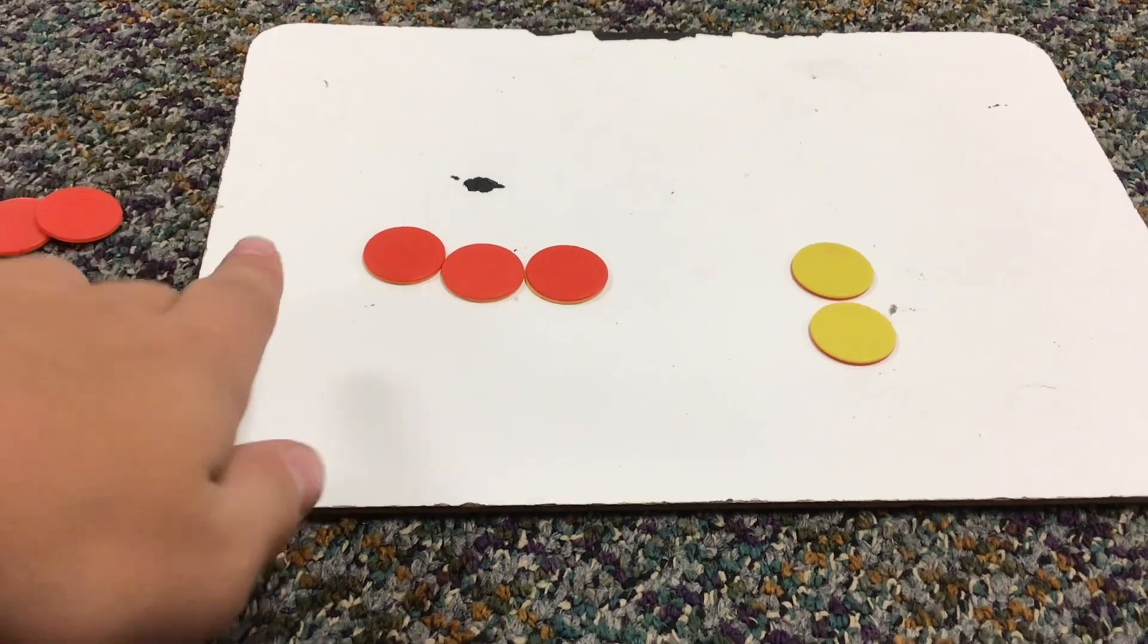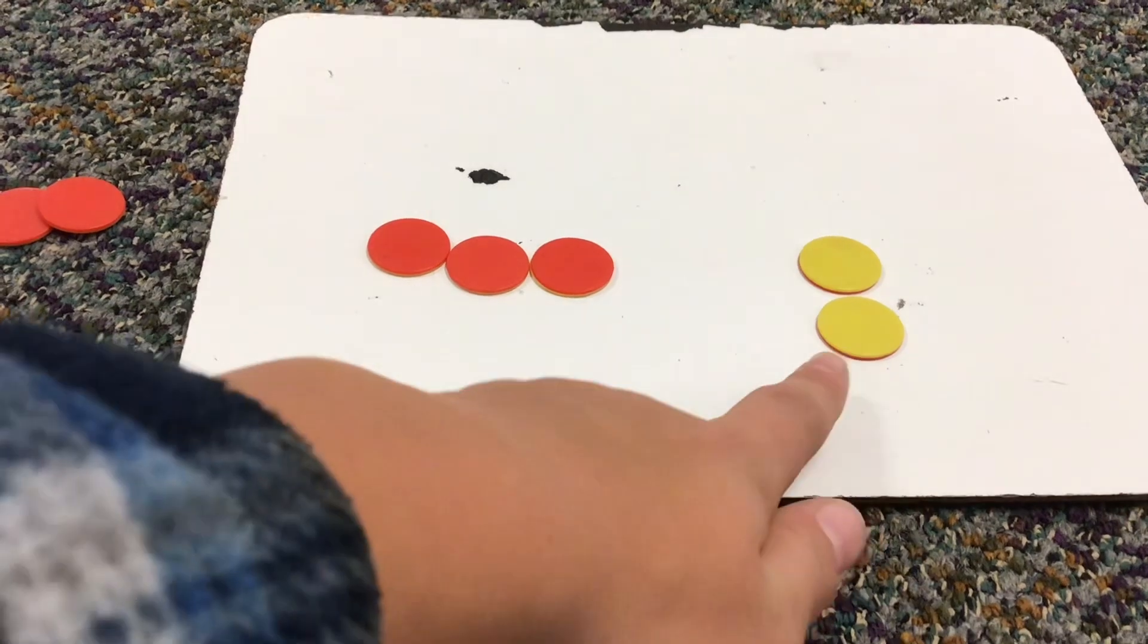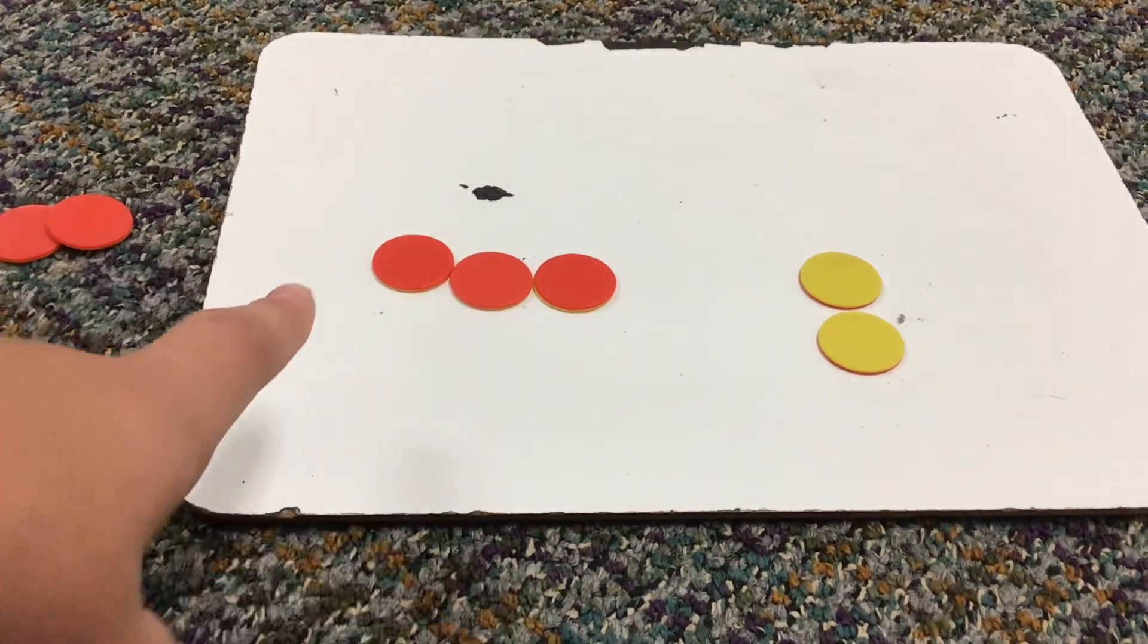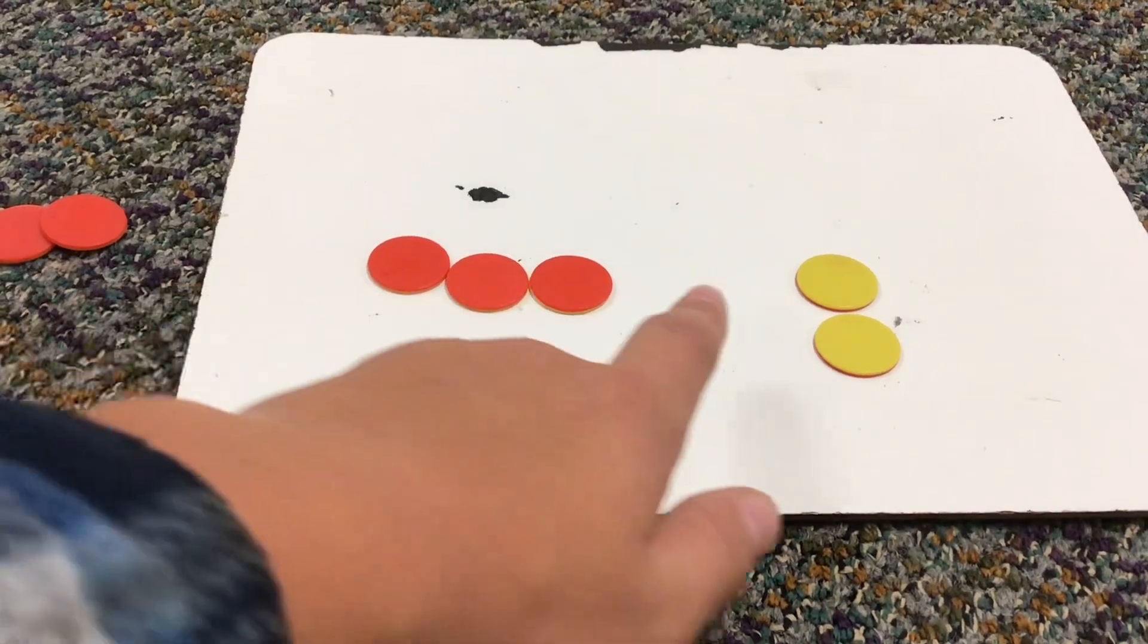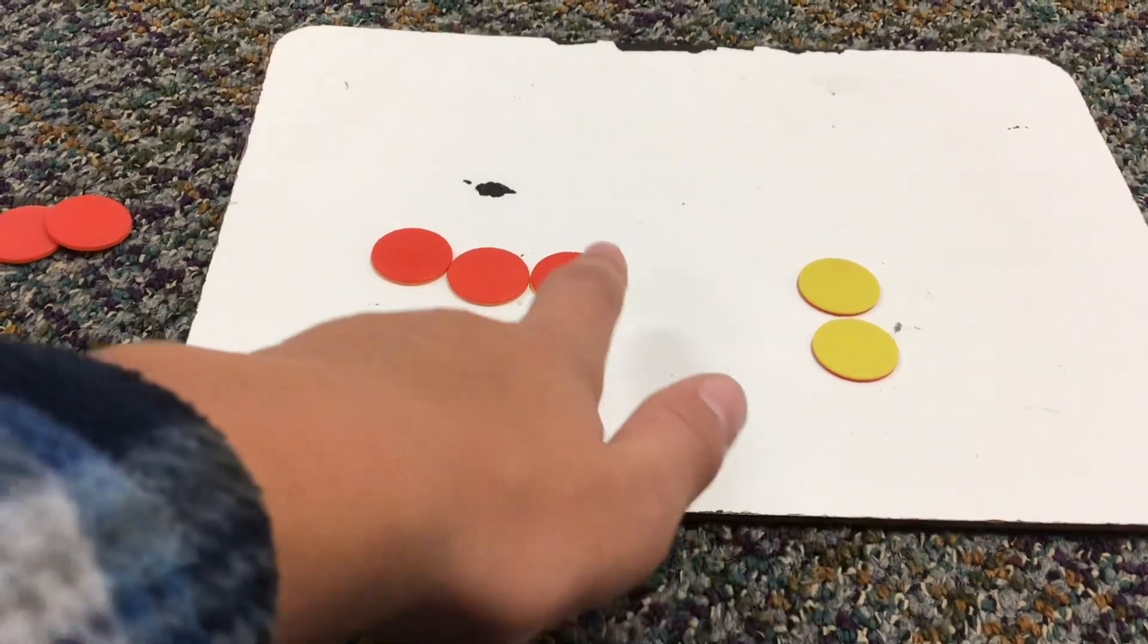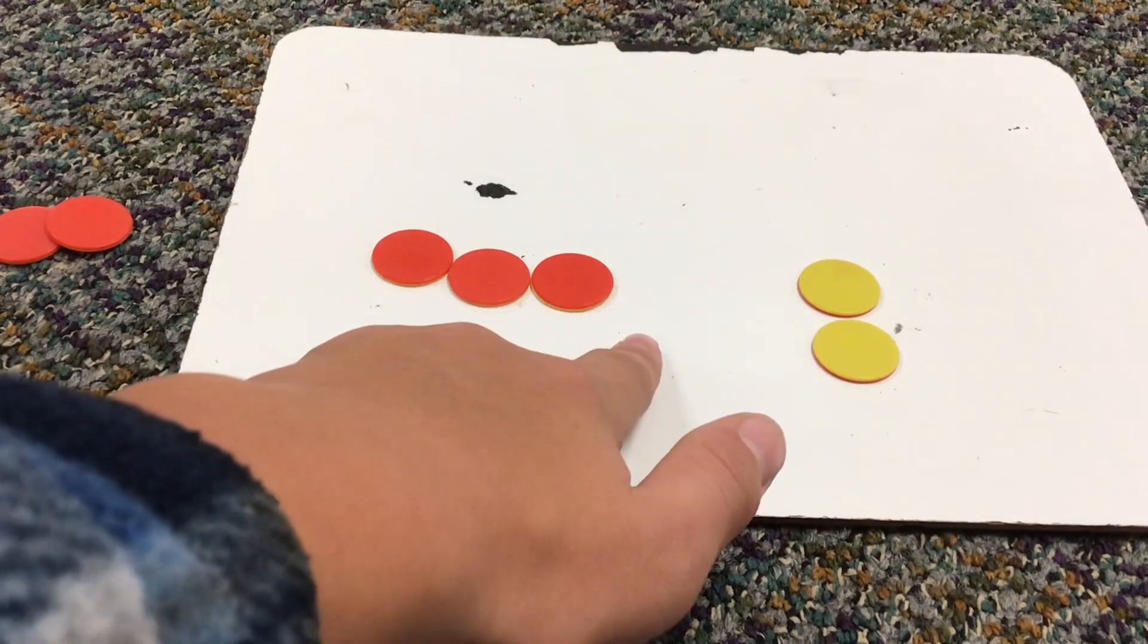For this part of the video, we're doing negative 3 times positive 2. So multiplication is pretty much just repeated addition. So you have negative 3 times 2, which would be negative 3 plus negative 3.